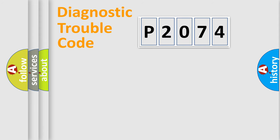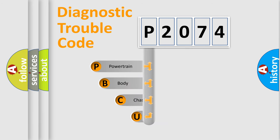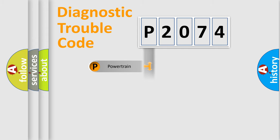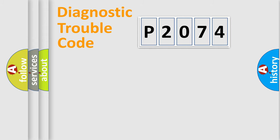Let's do this. First, let's look at the history of diagnostic fault code composition according to the OBD2 protocol, which is unified for all automakers since 2000. We divide the electric system of an automobile into four basic units: Powertrain, Body, Chassis, and Network.